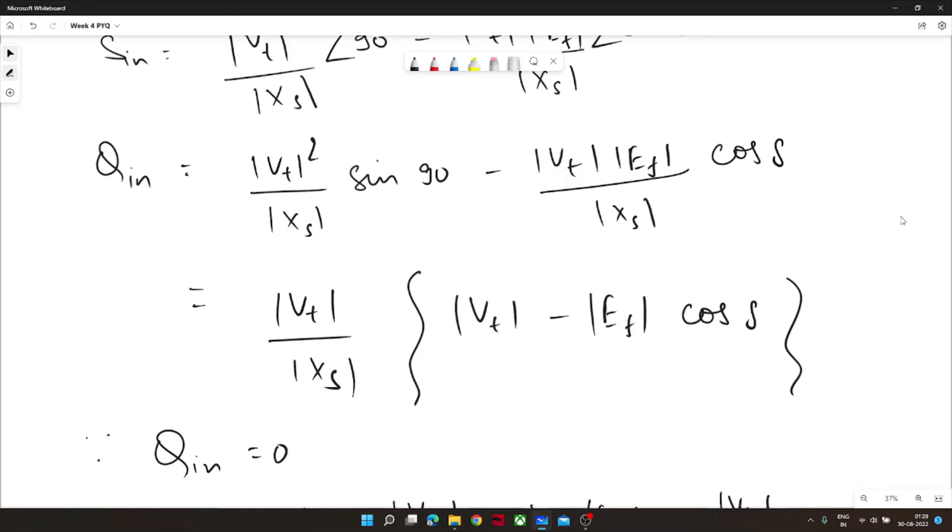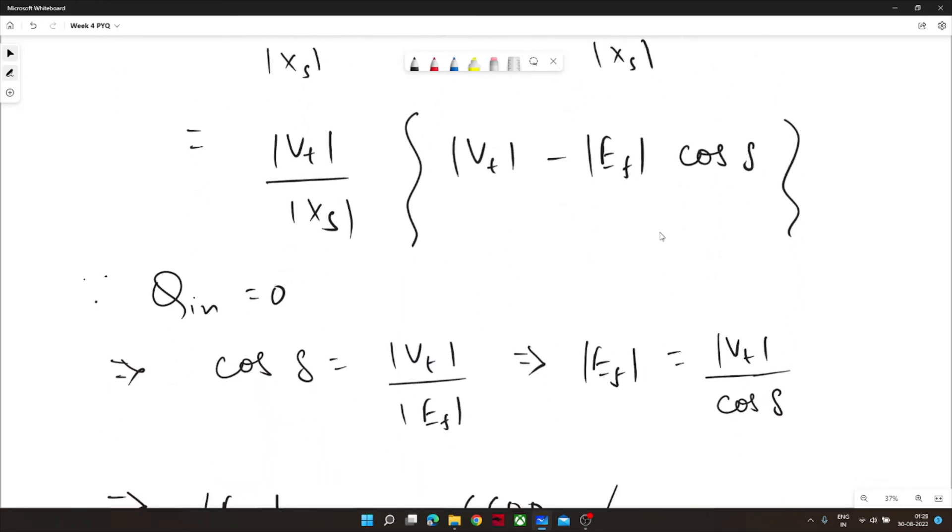Now we have to equate this equation to zero so we will reach to the formula V_t is equal to E_f cos delta.